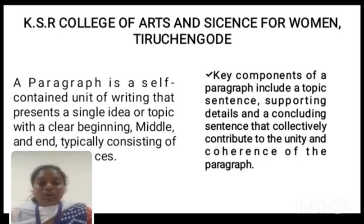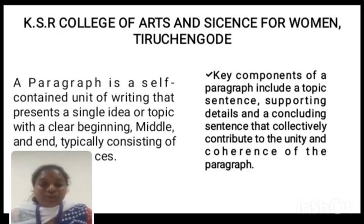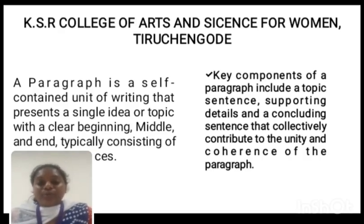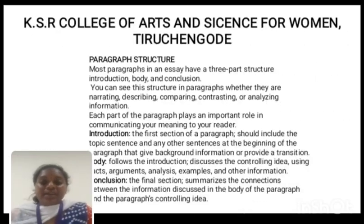The key components of a paragraph include a topic sentence, supporting details, and a concluding sentence. The topic sentence comes first, the supporting details continue the paragraph, and the concluding sentence conveys your final point of view and the real details. That is what we call the concluding sentence.